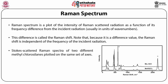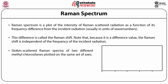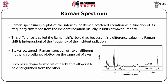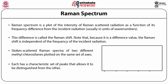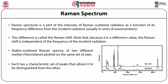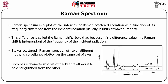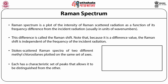Stokes-scattered Raman spectra of two different methyl chlorosilanes plotted on the same set of axes has been shown. These two different methyl chlorosilanes each have a characteristic set of peaks that allows them to be distinguished from each other — one is dimethyl chlorosilane and the other is monomethyl chlorosilane.